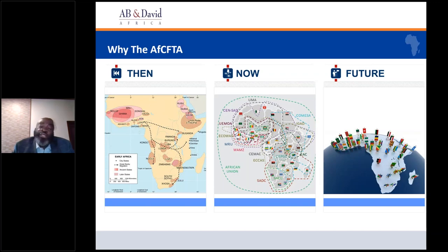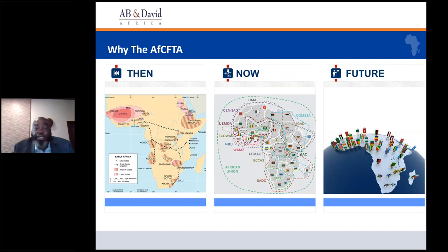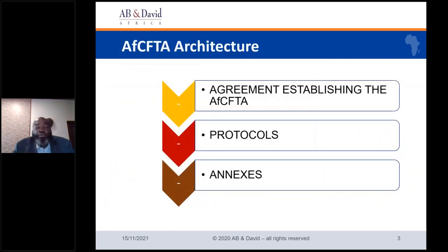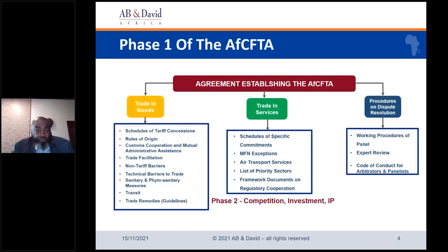Hopefully, with AFCFTA, by 2063, we should be able to get to the map on your right, where all countries are able to trade with each other freely across the borders. The AFCFTA is an agreement that establishes the trading area, consisting of the main agreement itself and then the protocols and annexes to the protocols. It is now in phase one; phase two is still being negotiated, and it started in January 2021.